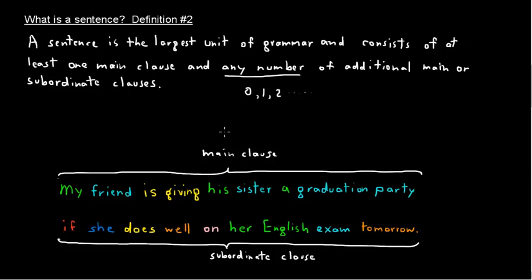You can have just one main clause, and that's still a sentence. You don't need these others, but you can have more. But you have to have at least that one main clause.